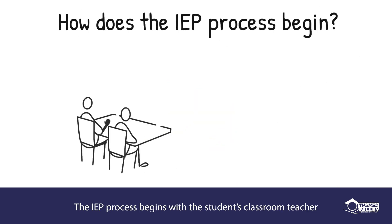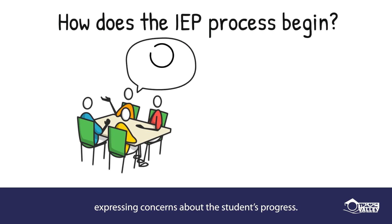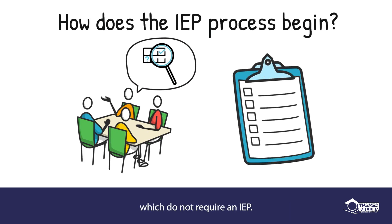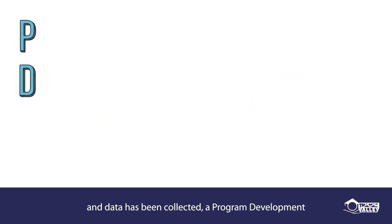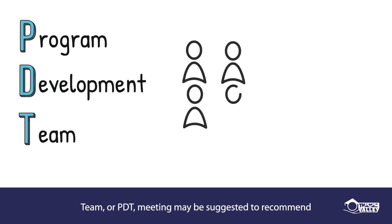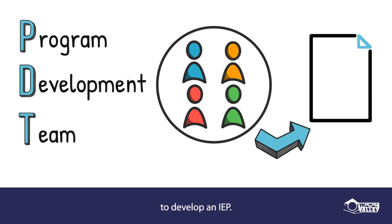The IEP process begins with the student's classroom teacher expressing concerns about the student's progress. Many accommodations can be offered to the student which do not require an IEP. After several strategies have been attempted and data has been collected, a Program Development Team or PDT meeting may be suggested to recommend the next steps, which could include the recommendation to develop an IEP.